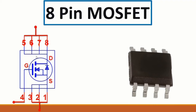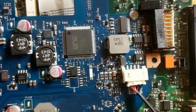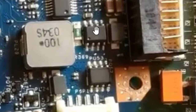The MOSFET receives control signals at the gate. When it receives the control signal, voltage passes through the internal diode from source to drain or drain to source, depending on whether it is an N-channel or P-channel MOSFET. On the motherboard, this is a MOSFET.